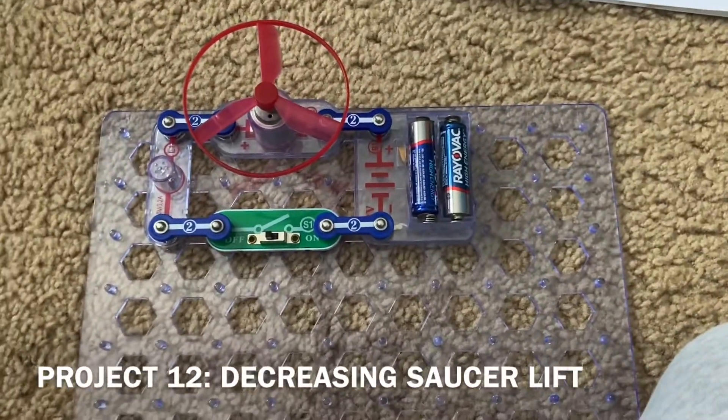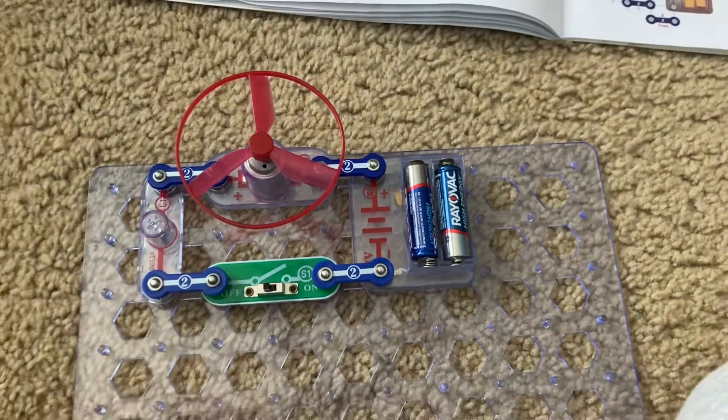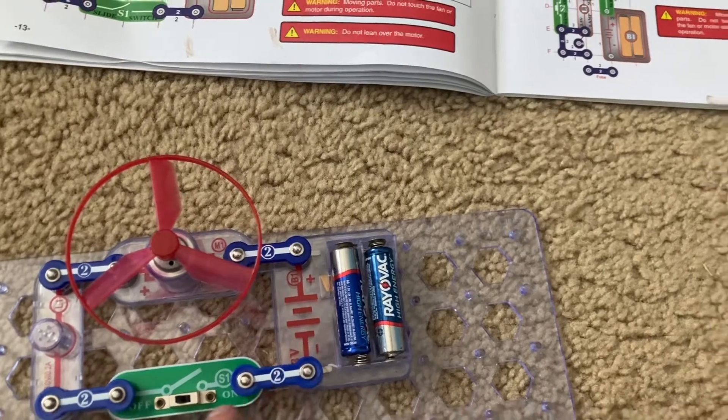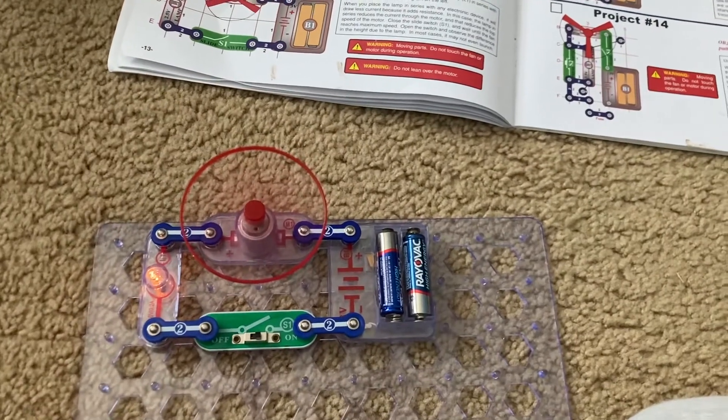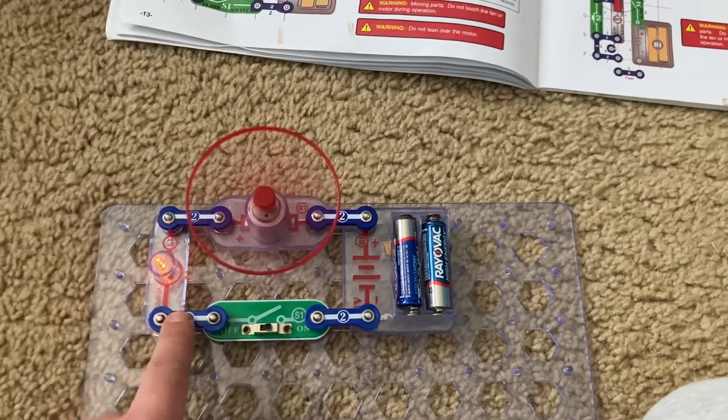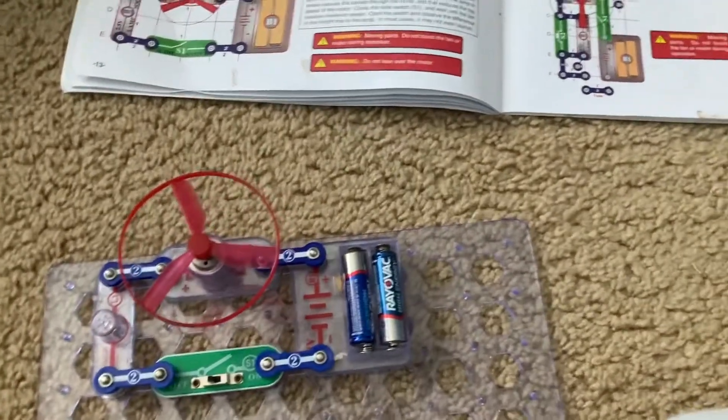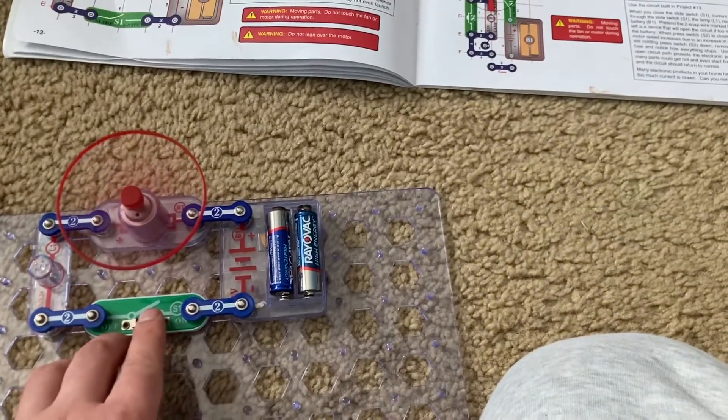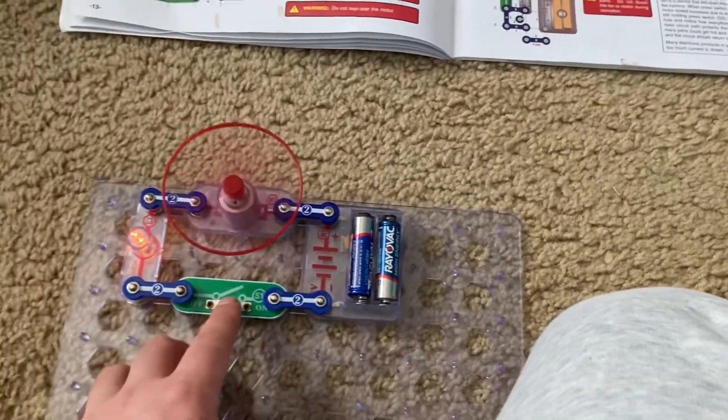Project 12 is decreasing saucer lift. I included the L1 lamp in the circuit, but the motor is still connected in the opposite direction, the negative side closest to the battery holder. The motor spins more slowly now that the lamp is acting like a resistor, restricting the current flowing through the motor. And when I turn off the slide switch, the motor does not, the fan does not lift off the motor. It's possible maybe if the batteries were completely fresh, it would work, but it does not right now.